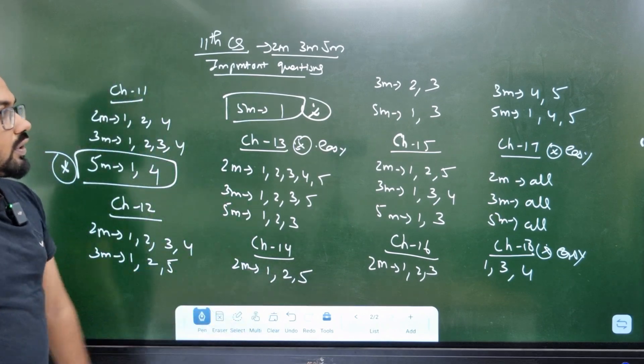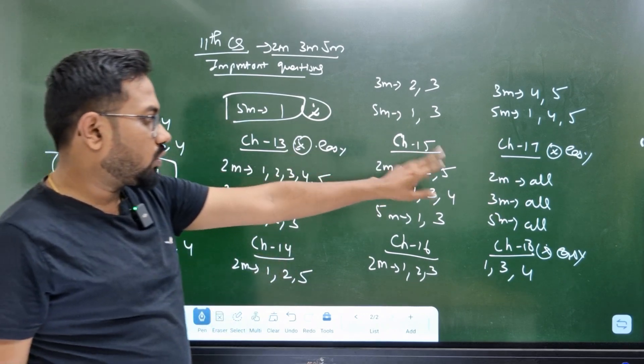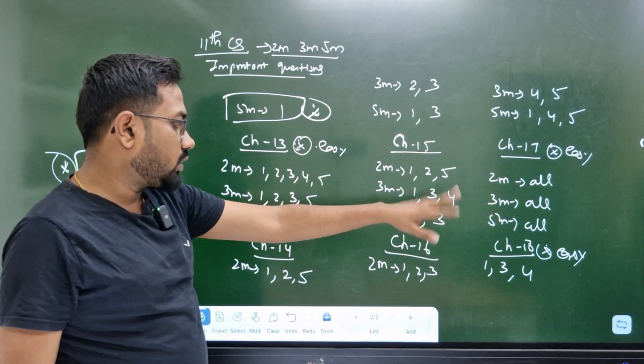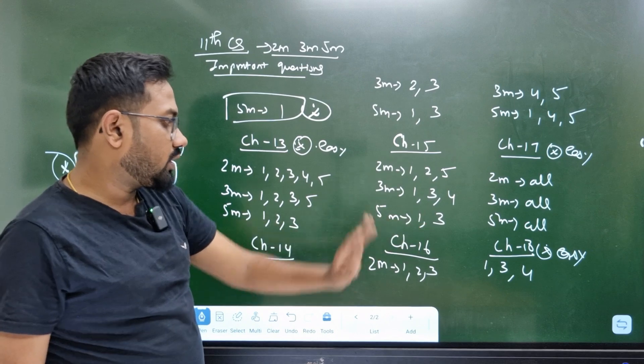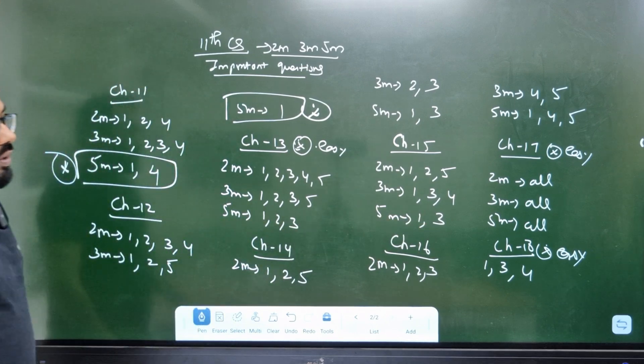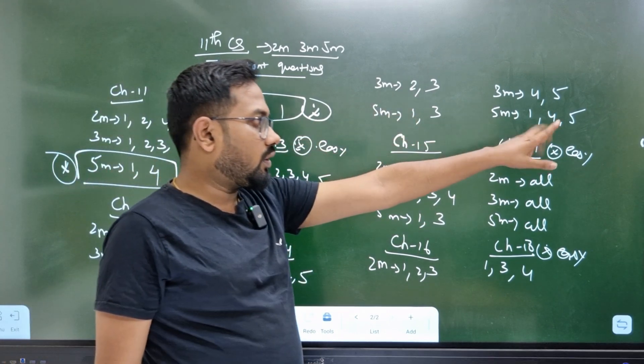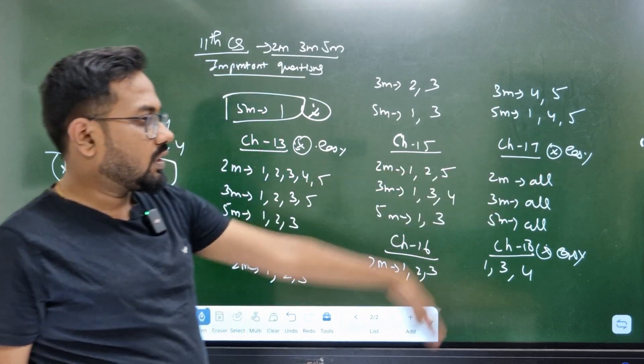Chapter 14 — 2 mark: 1, 2, 5. Chapter 15 — 2 mark: 1, 2, 5; 3 mark: 1, 3, 4; 5 mark: 1, 3. Chapter 16 — 2 mark: 1, 2, 3; 3 mark: 4, 5; 5 mark: 1, 4, 5.